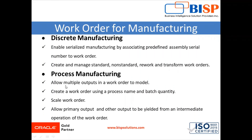In process manufacturing, the work order allows multiple outputs. You can create a work order using a process name or set the batch quantity. You can also scale your work order — for example, if you planned to make 1,000 units and find you have enough raw material to scale up, you can do that in manufacturing work orders. Process manufacturing also allows work orders for the primary output and other outputs to be yielded from an intermediate operation of the work order.